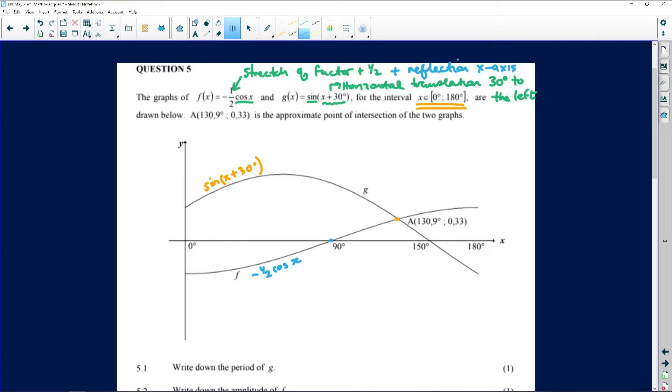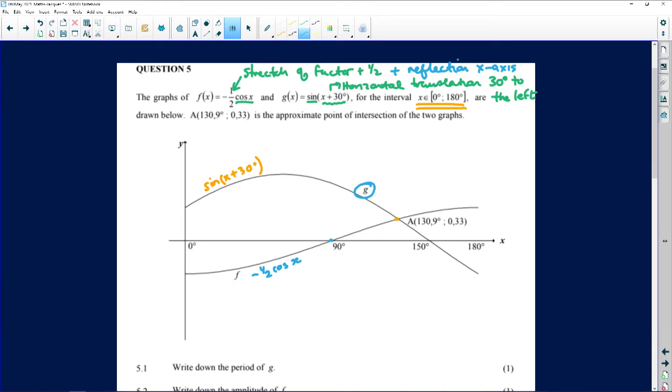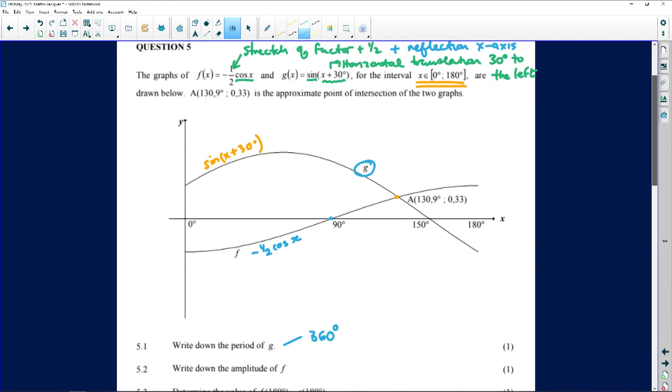The first question says write down the period of g. Now remember a period is the amount of degrees it is going to take this curve to complete a full cycle. The only time that your period of your graph changes is if you were to multiply that x with something. Here we're just adding or subtracting, so it is just literally moving left or moving right. So the period for one mark is 360 degrees.